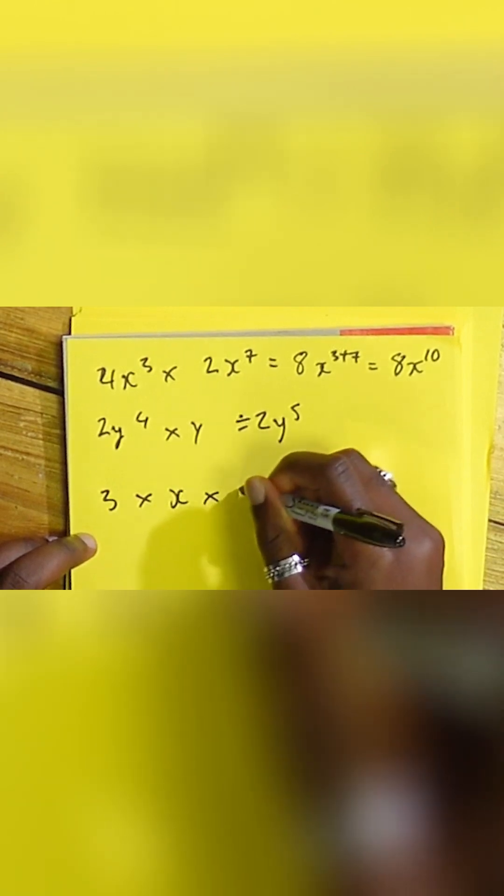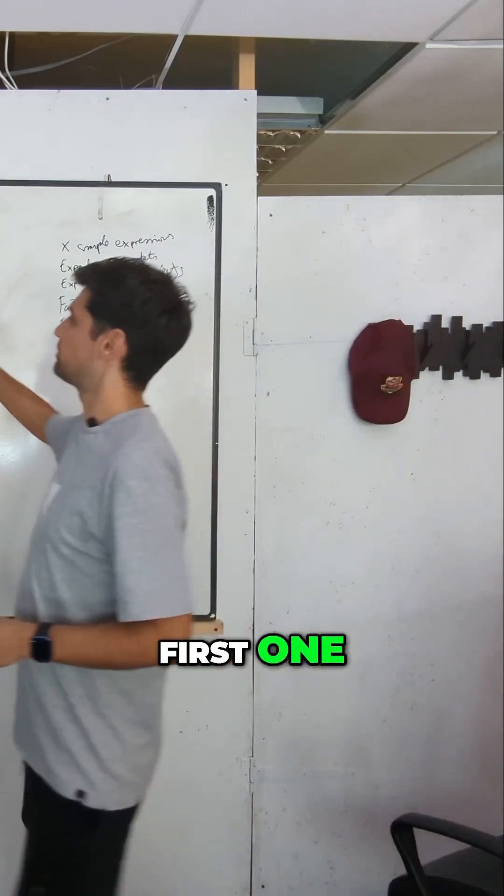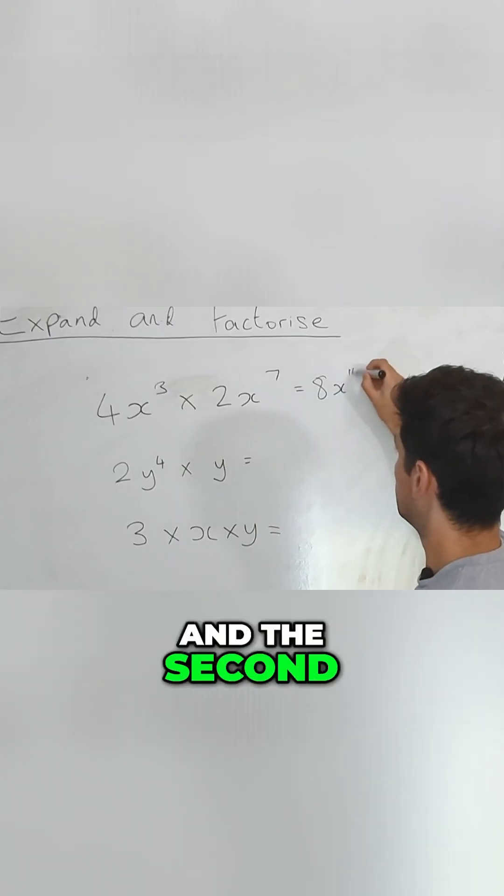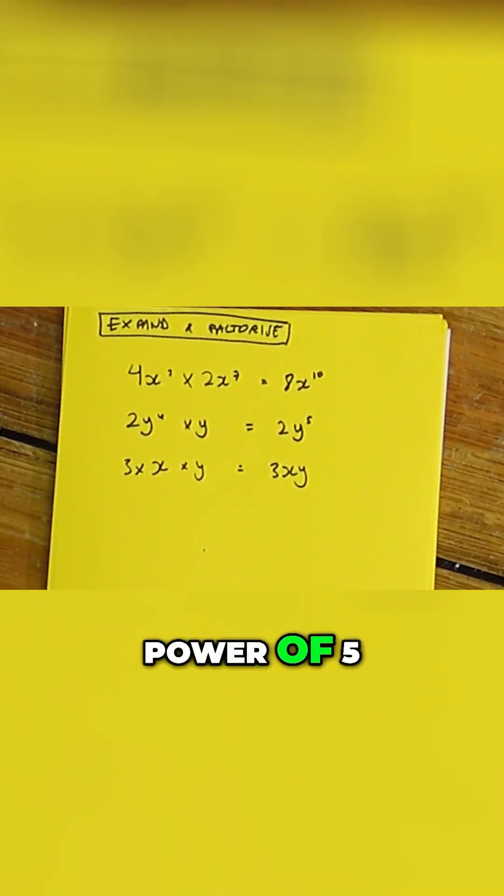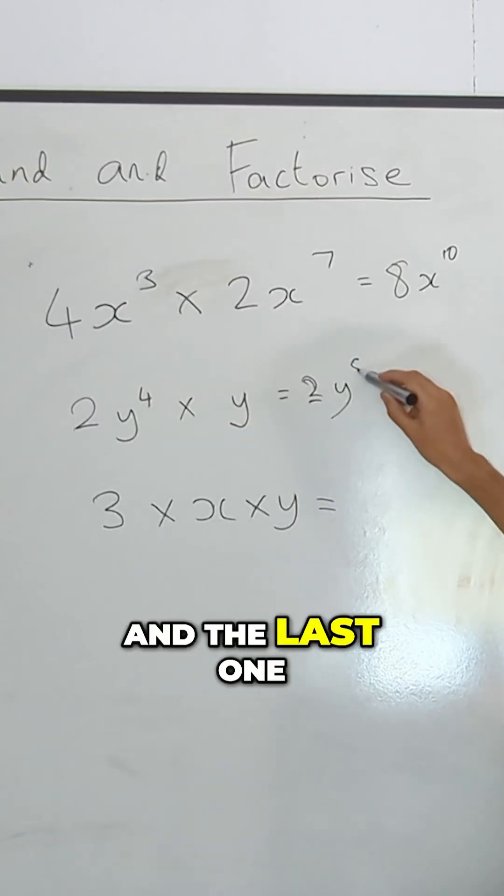What's that? Three, tired, and kind of like a lie. Three, X, Y. Okay, so we've got the first one. Eight, X to the power of ten. And the second. Two, Y to the power of five. Good. And the last one. Three, X, Y. Great.